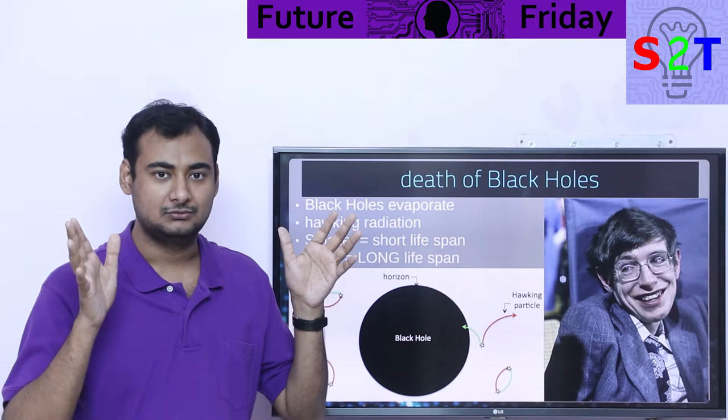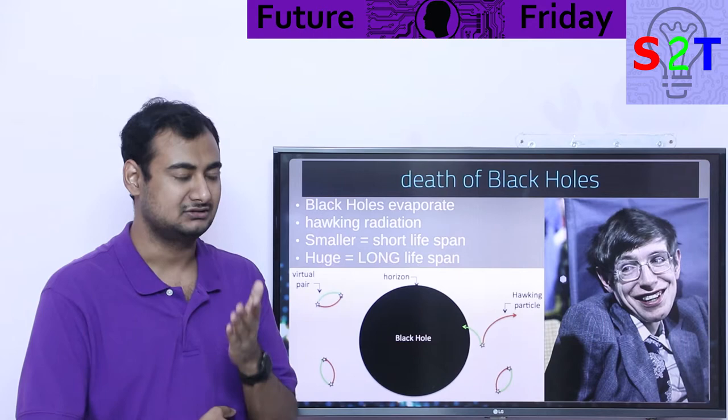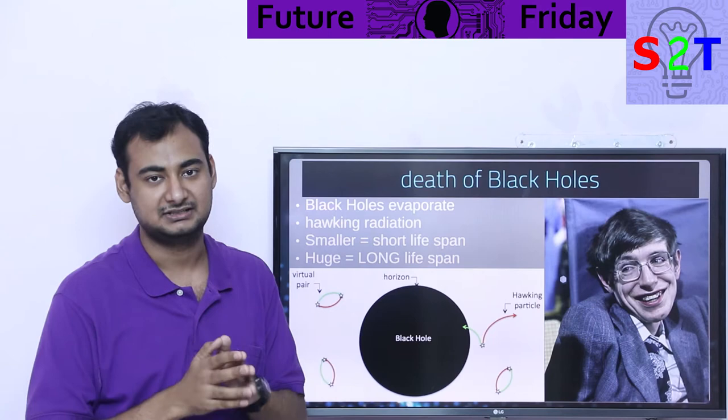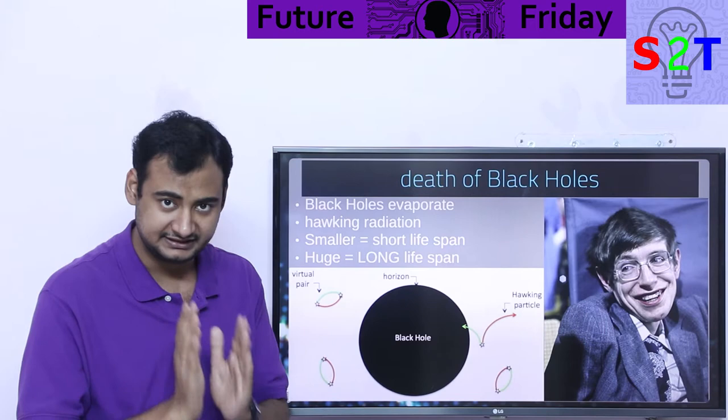How does that happen? When you take the cleanest vacuum, in quantum physics you have virtual particles. These particles are created in pairs, they go apart and collapse, and nobody knows it happened. This is called zero point energy. This is a known, tested thing.